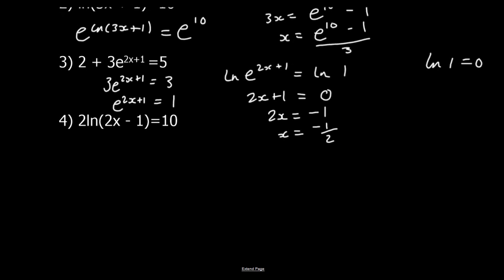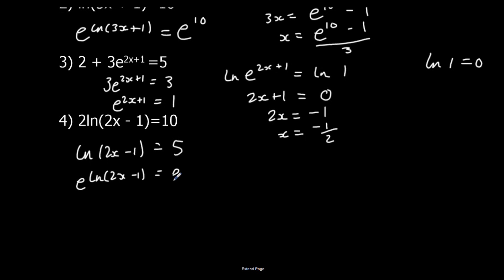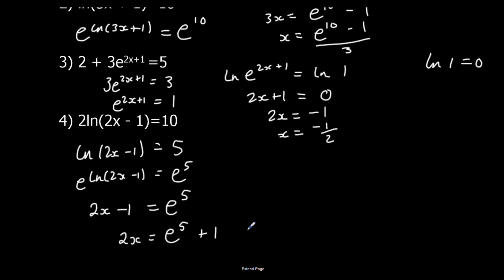Finally: 2 ln(2x - 1) = 10. Divide both sides by 2: ln(2x - 1) = 5. Apply e to both sides to get rid of ln: e^(ln(2x - 1)) = e^5. ln cancels, so 2x - 1 = e^5. Add 1 to both sides: 2x = e^5 + 1, then divide by 2: x = (e^5 + 1) / 2.